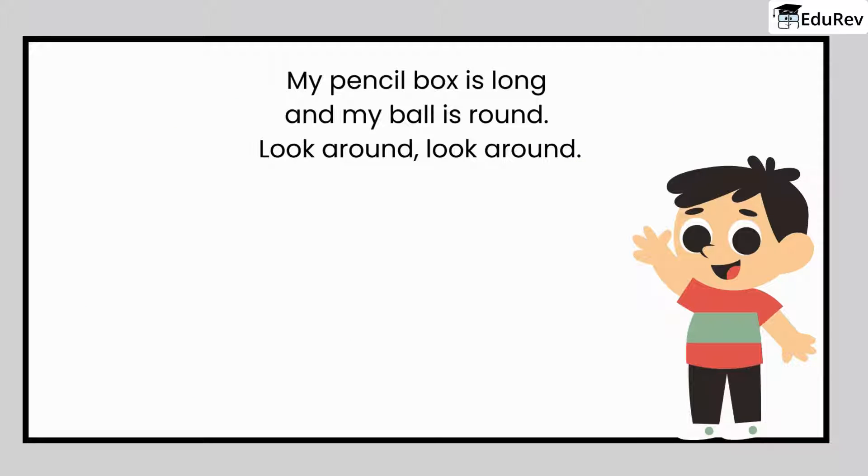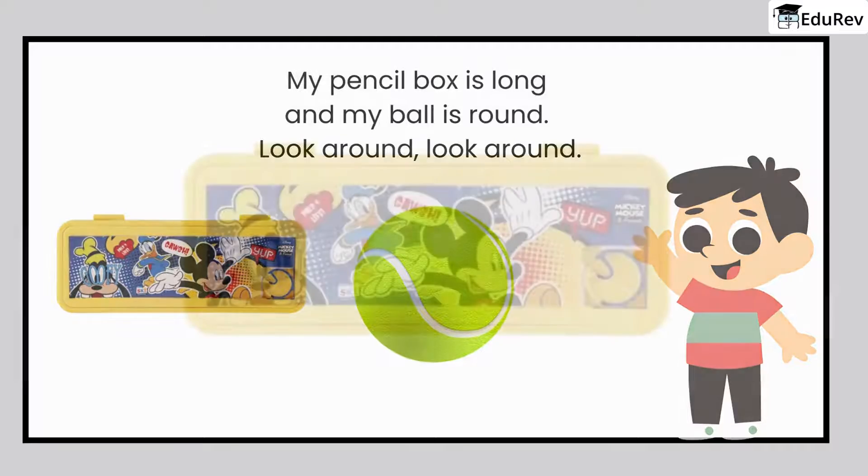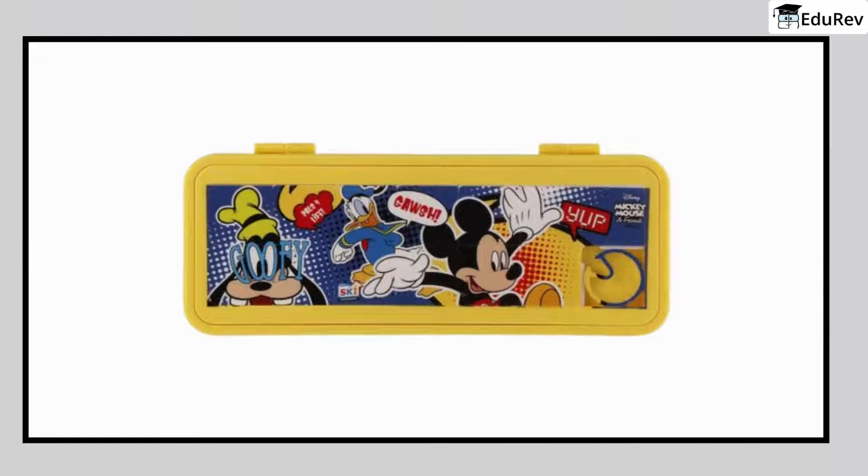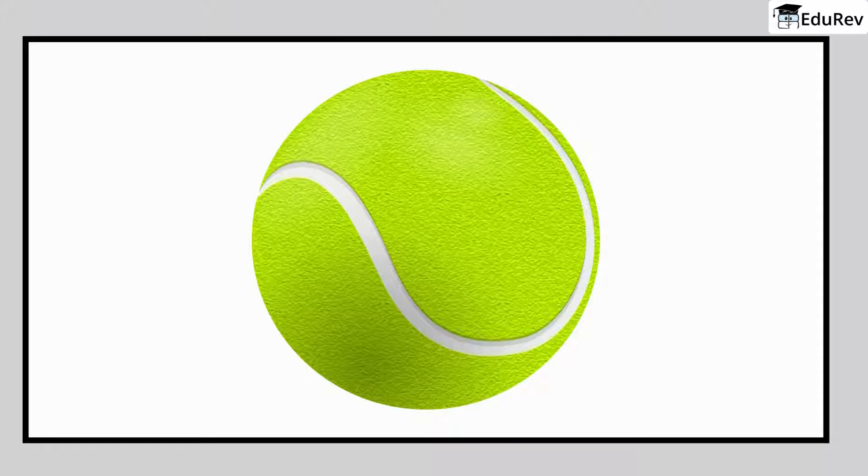The first boy says, my pencil box is long and my ball is round. Look around, look around. Look at this picture of a pencil box. See how long it is. Now look at this picture of a ball, it is very round in shape.